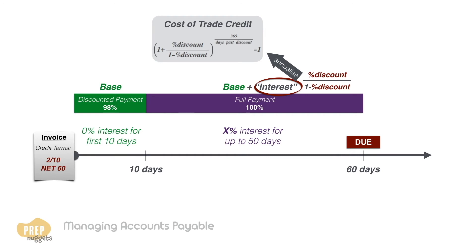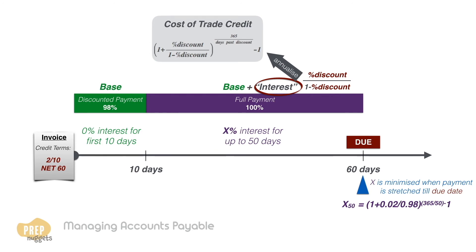As this interest amount is fixed up to the due date, the interest rate is minimized when the payment is stretched until the due date. Let's determine the cost of trade credit if the firm chooses to pay on the 60th day. The discount is 2% and the number of days past discount is 50. We get an annualized cost of trade credit of 15.9%, meaning the firm is effectively paying 15.9% annualized interest if it foregoes the discount and stretches payment to the due date.